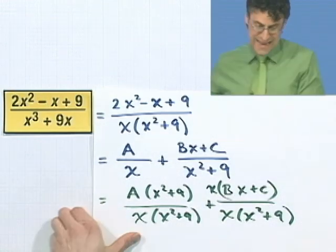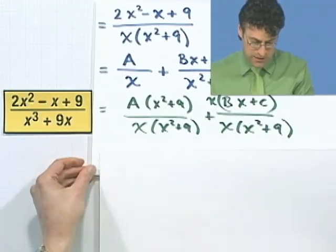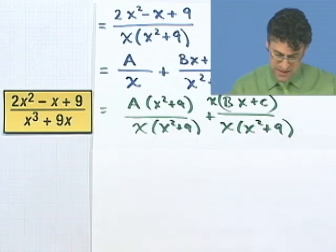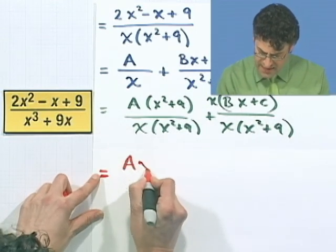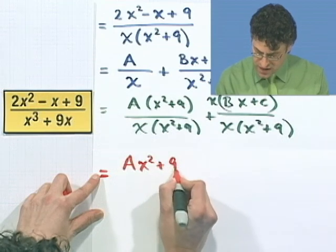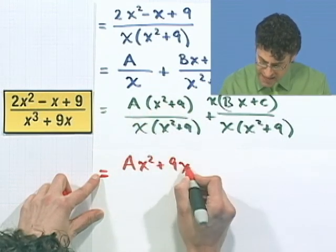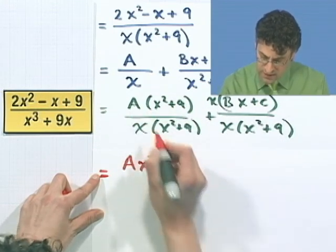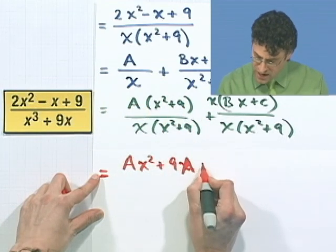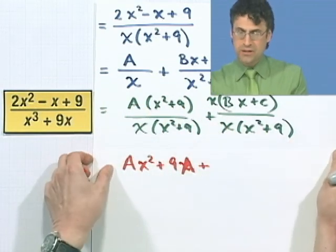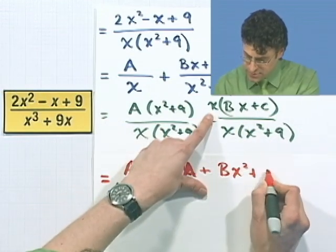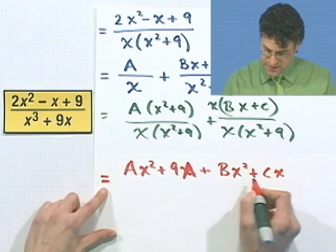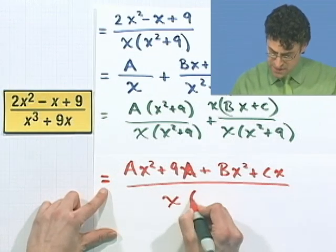what I see is the following fantastic, fantastic looking thing. I love this because what I see is ax squared plus 9a, because I have to multiply that by a, plus, and then, plus b times x squared plus cx. And that's all divided by the common denominator.